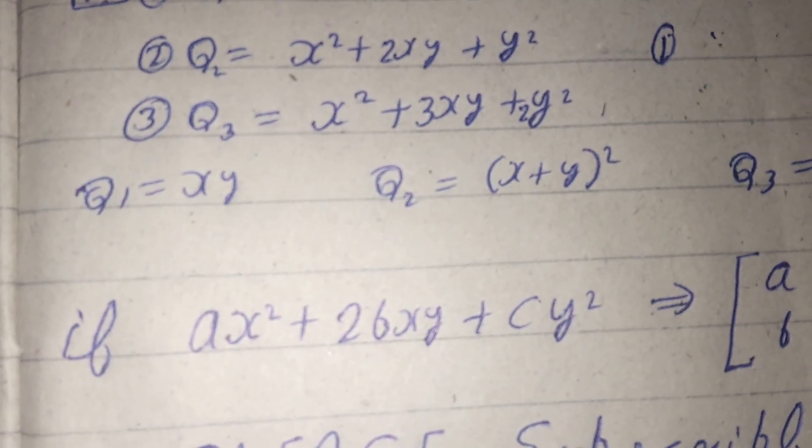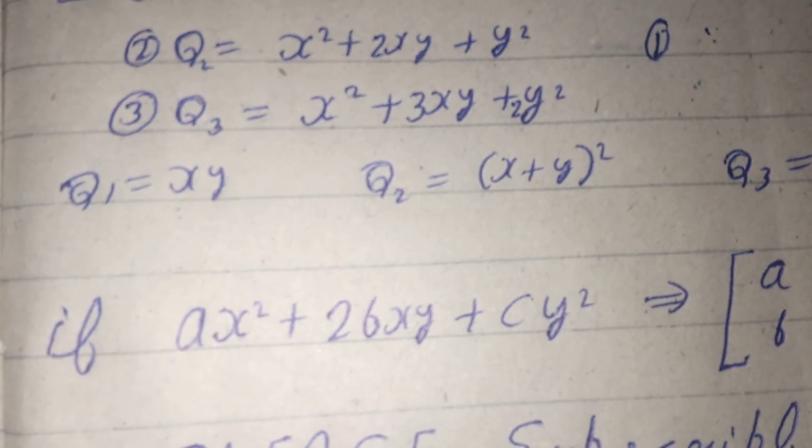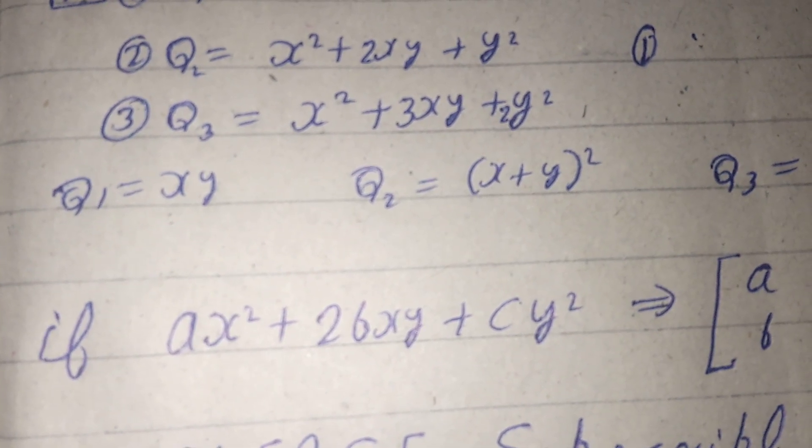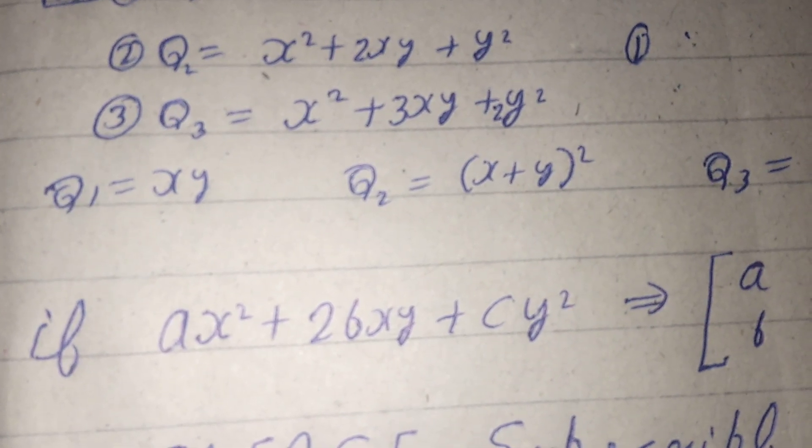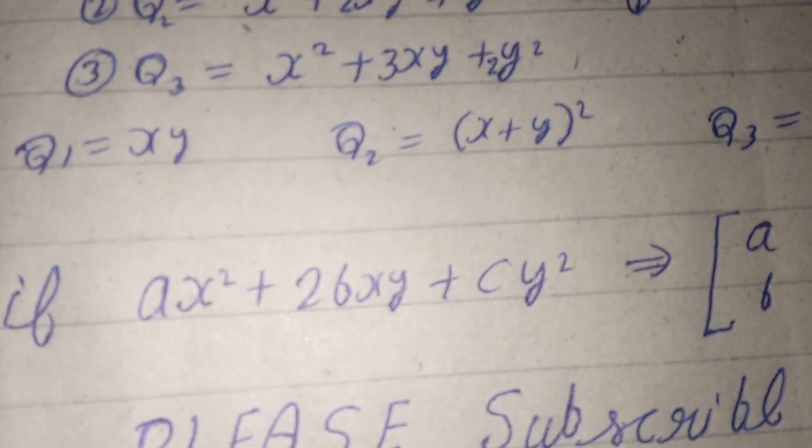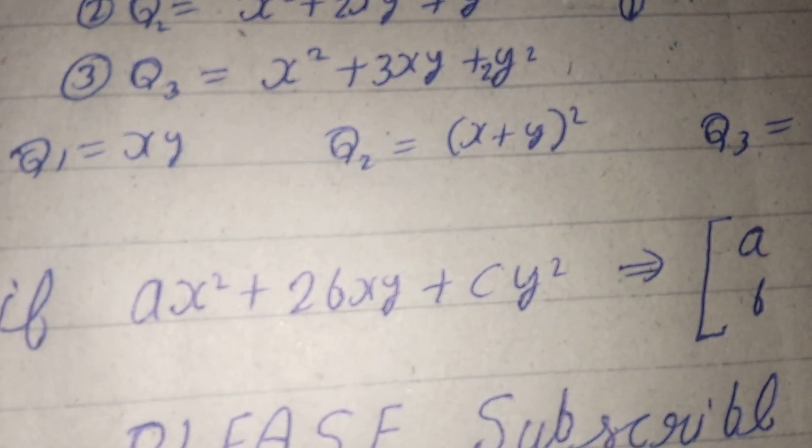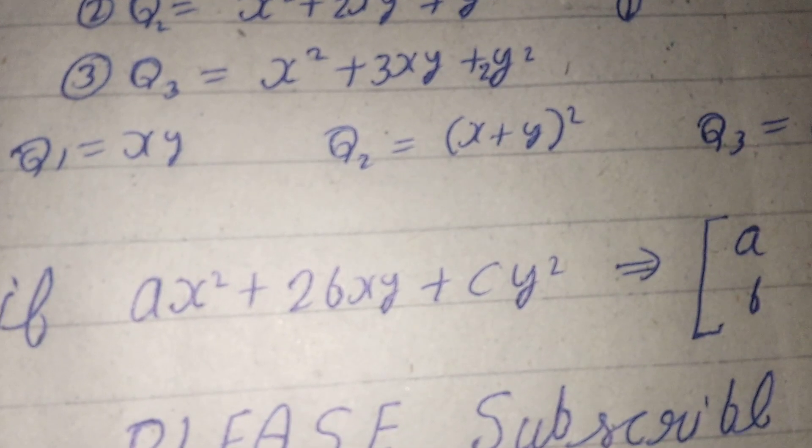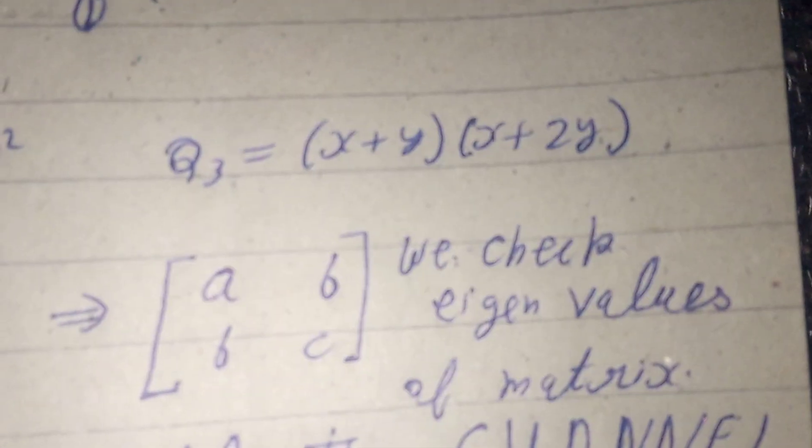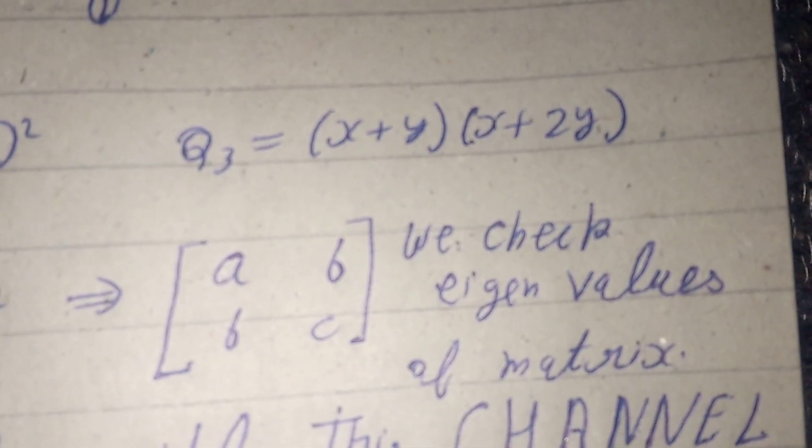In q2, we see that x² + 2xy + y² is clearly a non-negative quantity. But q3, which is x² + 3xy + 2y², factorizes to (x + y)(x + 2y).